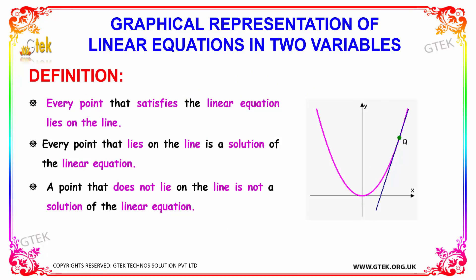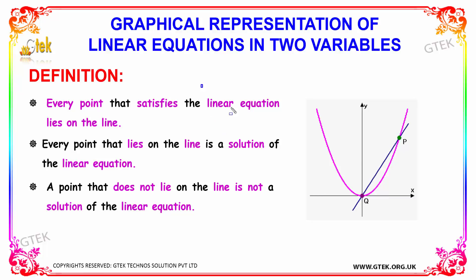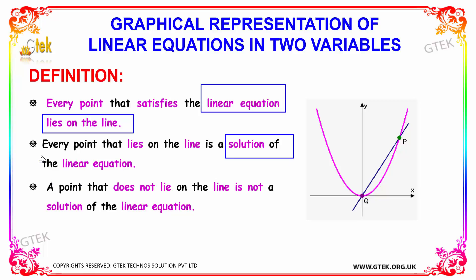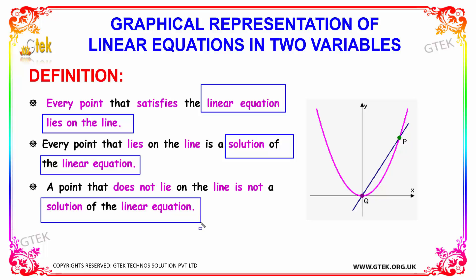In terms of graphical representation of a linear equation in two variables, every point that lies on the line satisfies the linear equation. Conversely, every point that lies on the line is a solution for that particular linear equation. A point that does not lie on the line is not a solution of the linear equation. These are the key definitional points for graphical representation of linear equations in two variables.